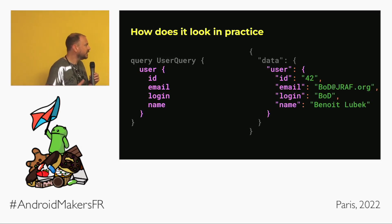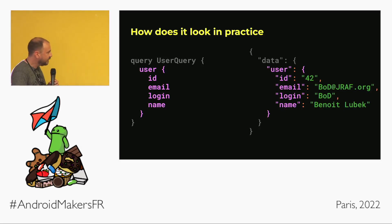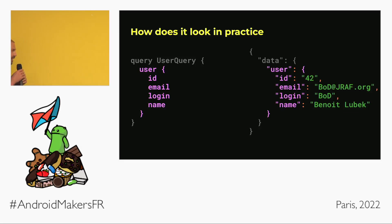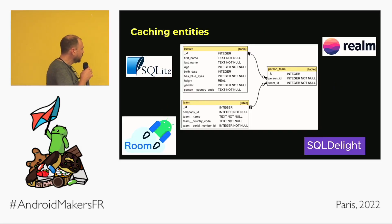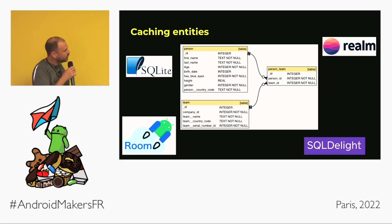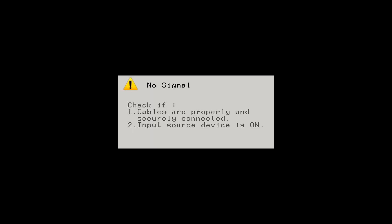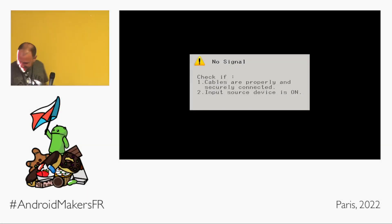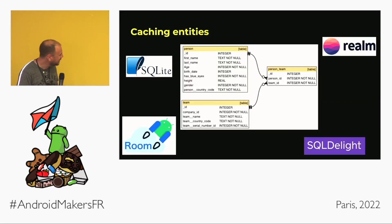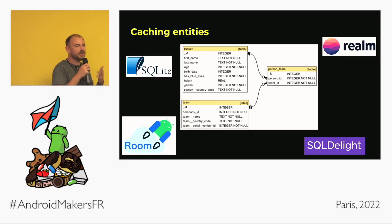That's a fundamental difference from REST, and it has an impact on caching. A common practice for caching on mobile is to use a relational database and cache your entities by mapping them to tables — one table per entity and one column per field of that entity, with foreign keys to link them together.